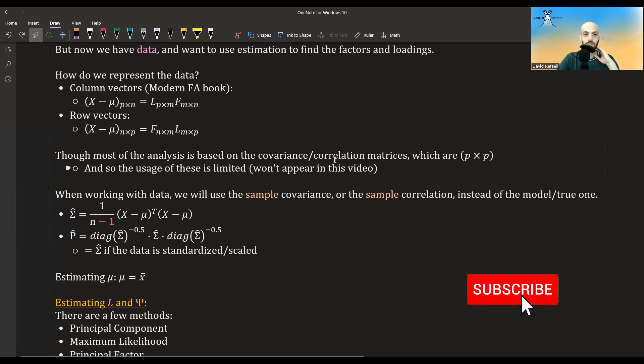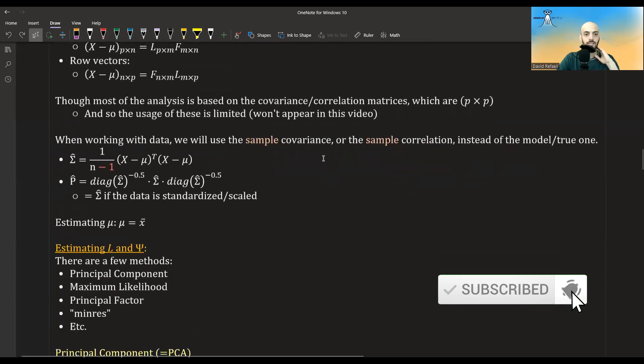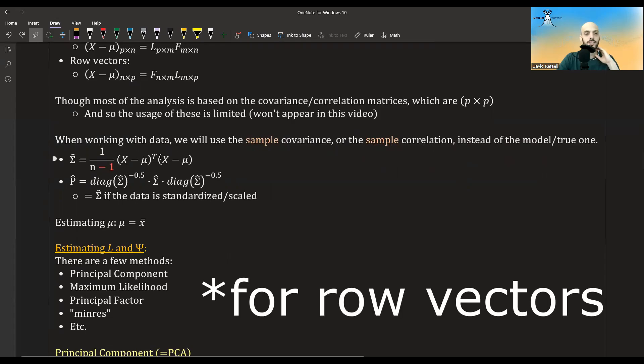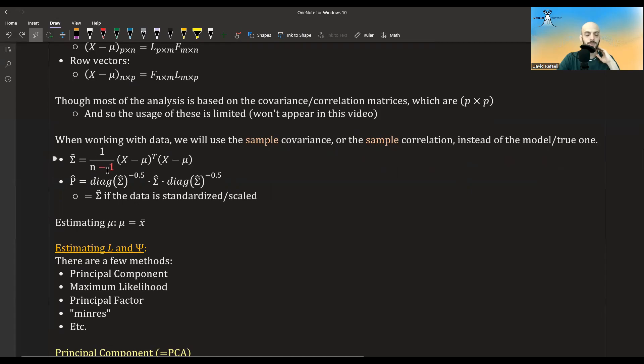Though we don't really need this for this video, since all of the calculation will be done on the covariance or correlation matrices. So when working with the data, we will use the sample covariance and the sample correlations instead of the model ones. So the sample covariance is just this. If we use the unbiased one, we should divide by N minus 1, but if we use the maximal likelihood, we could use just the 1 over N.